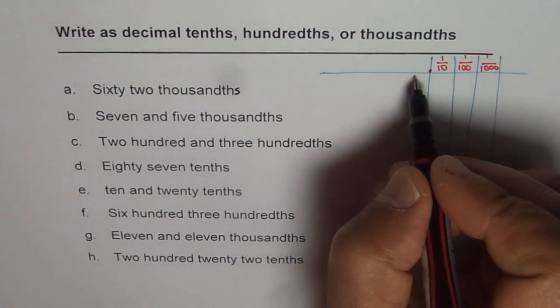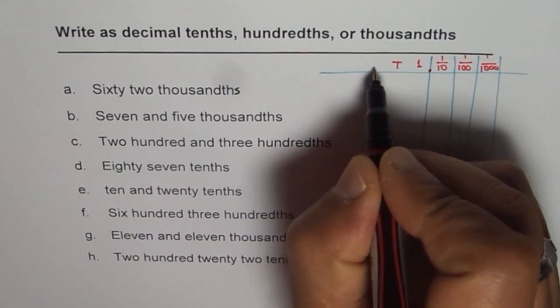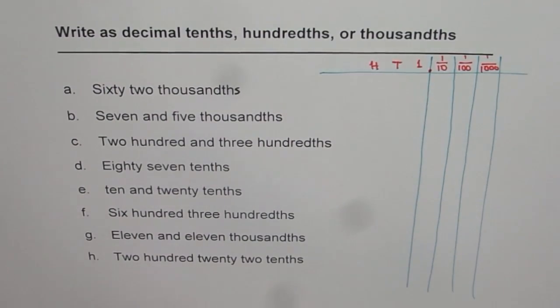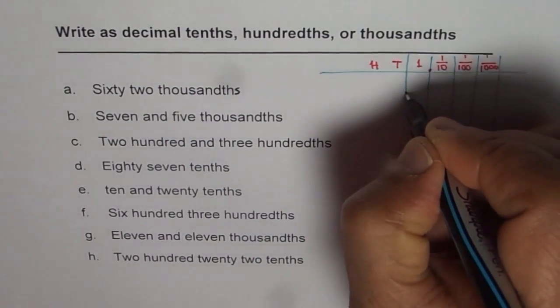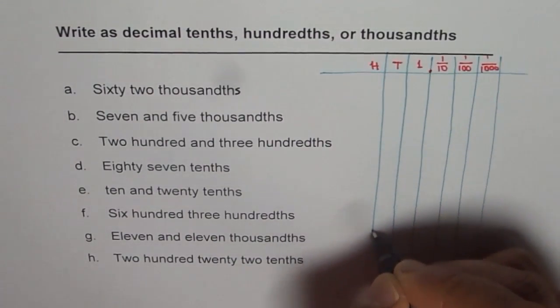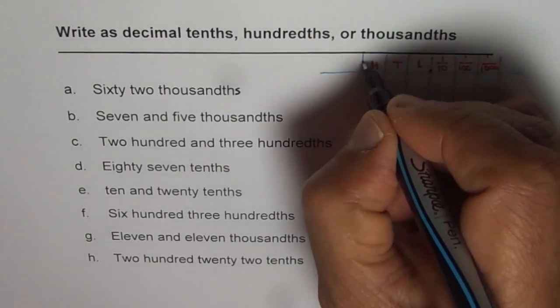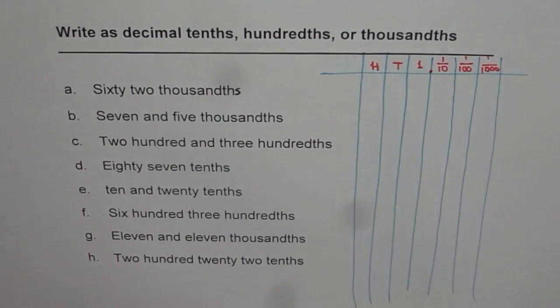On the left side what should we have? Ones, tens and hundreds, correct? So let's write down ones, tens and hundreds and draw our lines. Ones, tens, hundreds, right? It can go on and on, thousands and so on.